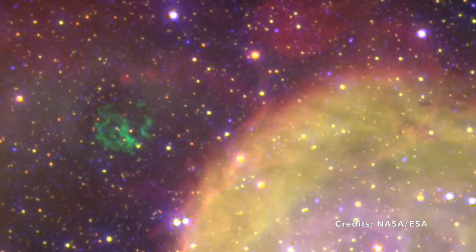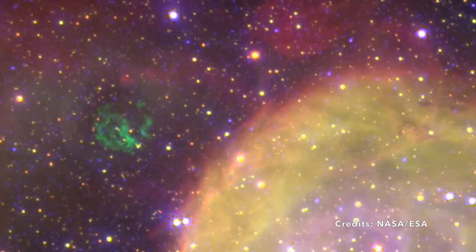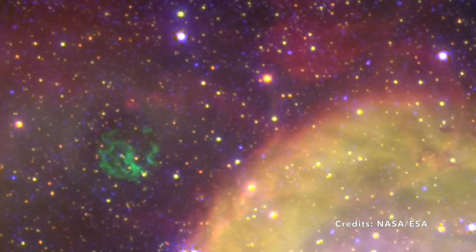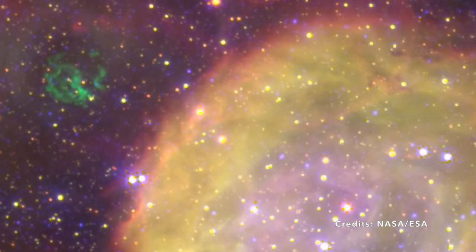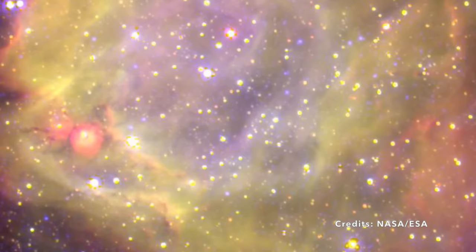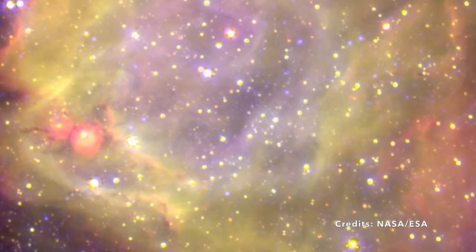Ever heard of the gentle solar wind from our sun? A stream of charged particles flowing outwards? Now magnify that wind's intensity by an astonishing 10 to 1,000 million times, and you'd come close to understanding the sheer force of AB7's stellar winds. It's like comparing a gentle breeze to the most powerful tornado. These mighty winds don't just whisper, they shout, sculpting the surrounding space material into captivating bubbles.